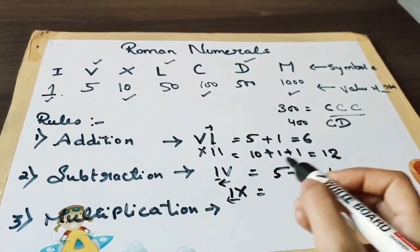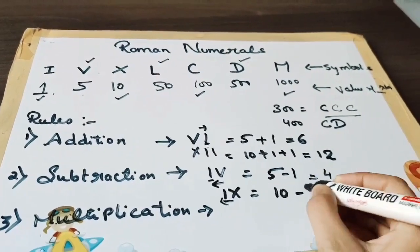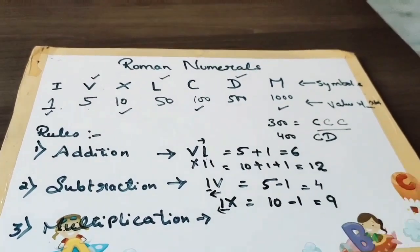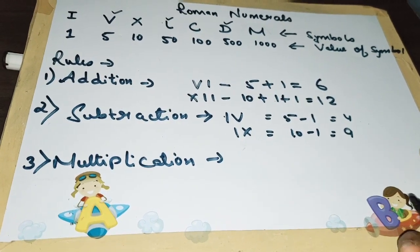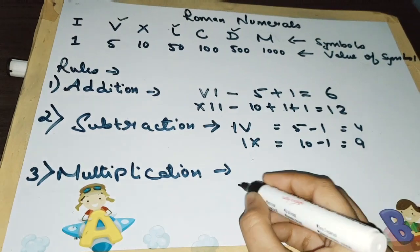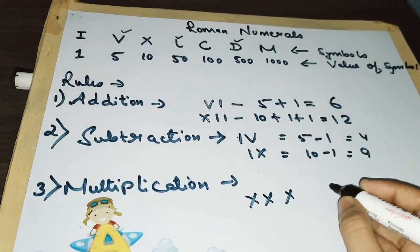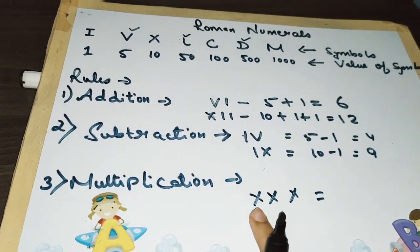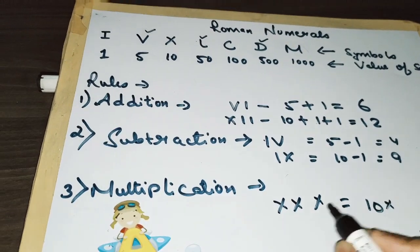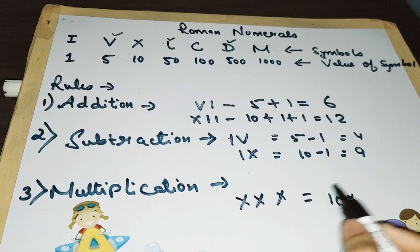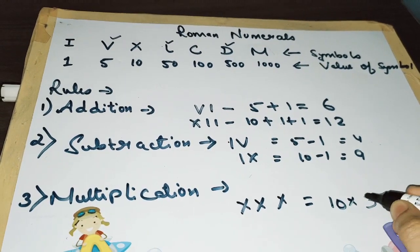Now the next rule is multiplication. When we are doing multiplication, for example, I am taking 3 numbers. This value of X is 10, and how many X's are there? 1, 2, 3. So we will multiply it with 3, so it will be 30.